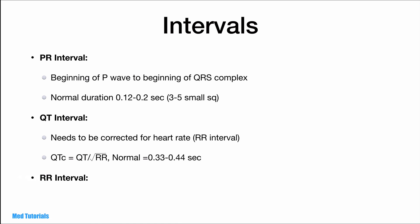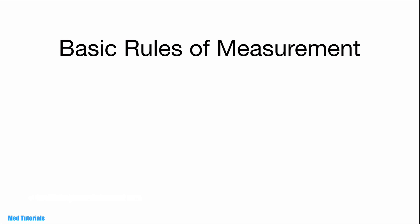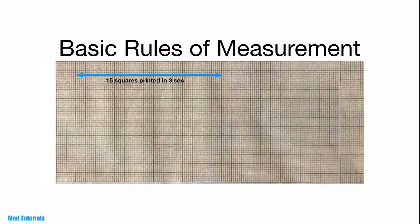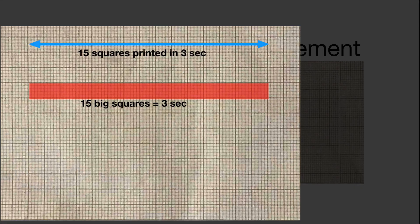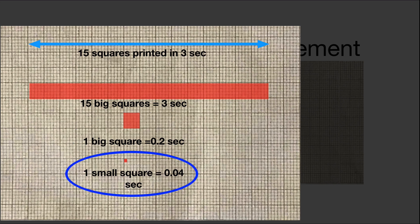The third interval we commonly measure is the RR interval, which gives us the heart rate. The ECG paper comes out of the machine at a fixed speed of 15 big squares in 3 seconds, so 1 big square equals 0.2 seconds. Since 1 big square equals 5 small squares, 1 small square equals 0.04 seconds. Just remember: 1 big square equals 0.2 seconds and 1 small square equals 0.04 seconds.